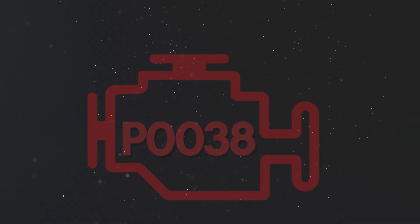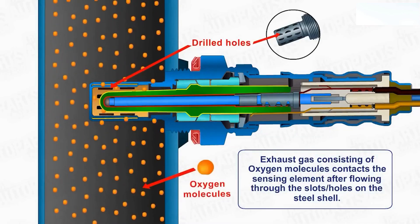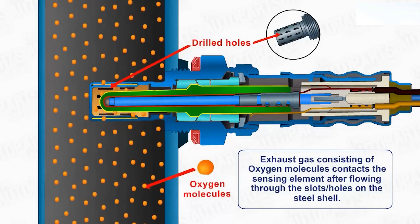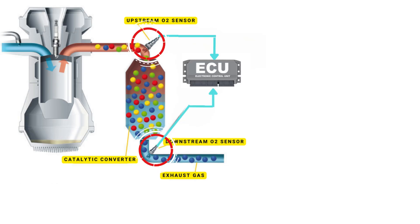Now, let's learn why P0038 was triggered. Your vehicle's oxygen sensor plays a vital role in monitoring the oxygen content in the exhaust gases. It sends this data to the ECU, which then uses it to maintain the optimal air-fuel ratio.